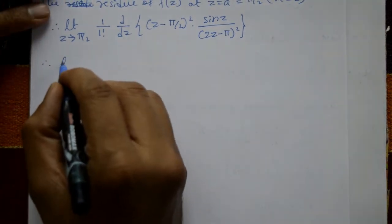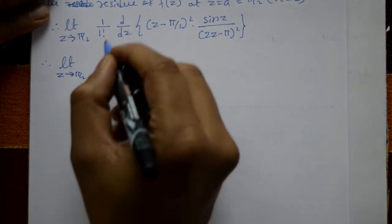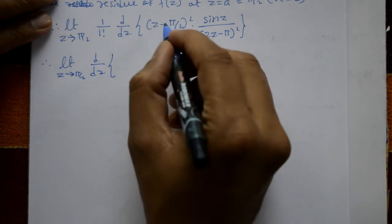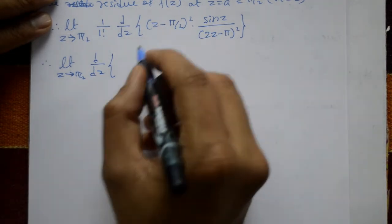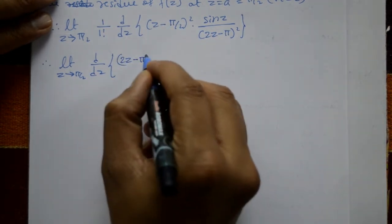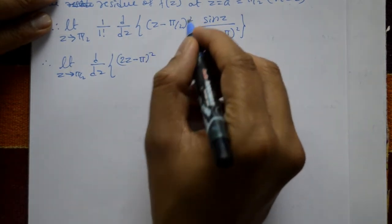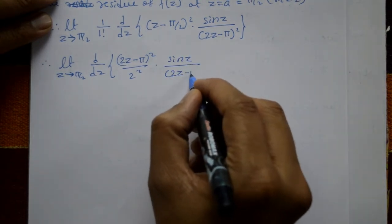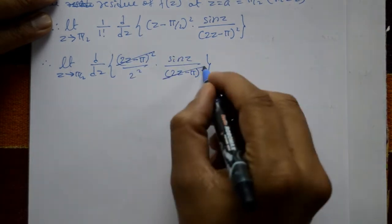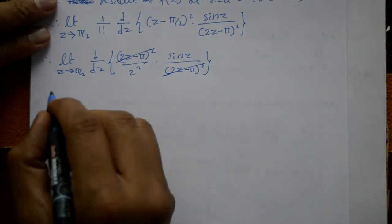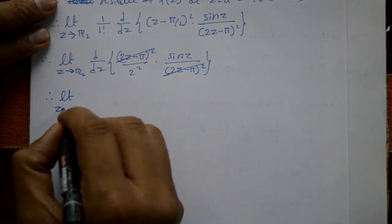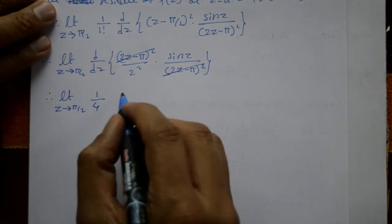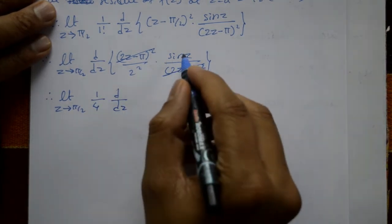This gives the limit as z tends to π/2 of (1/1!) · d/dz of sin z / 4. Taking the constant 1/4 outside, we differentiate sin z with respect to z to get cos z.